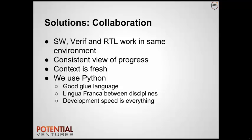In order to integrate early, we need an environment that facilitates this collaboration. One of the reasons Potential Ventures created our open-source Python verification framework was to enable all engineers to develop against the same code base. This means that the hardware designers, the verification engineers, and the software team all work with the same code at the same time. The reduction in communication overhead is substantial. It also avoids that situation where people ask you detailed questions about something you were doing six months ago and you've since thoroughly forgotten about. Python is a good language for this — it's accessible to engineers coming from different backgrounds, it's easy to call into C or C++ routines, and most importantly it's blindingly fast to develop.